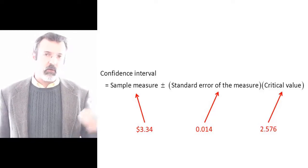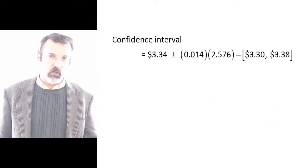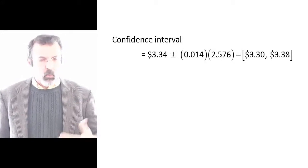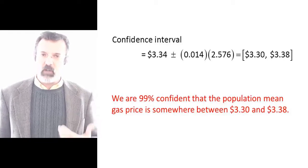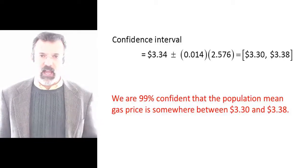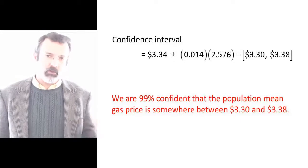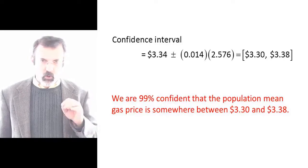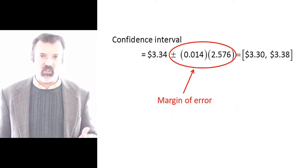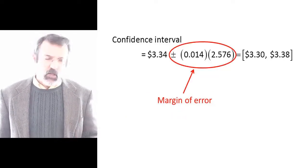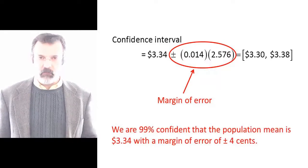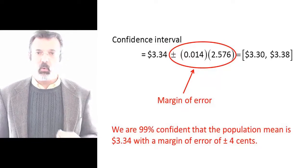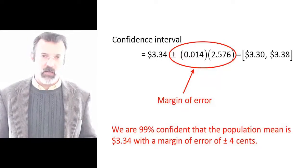This gives me a range of $3.30 on the low end and $3.38 on the high end. So I would make a statement like the following: we are 99% confident that the population average price of gas is somewhere between $3.30 and $3.38. The plus or minus part we call the margin of error — in this case, the margin of error is 4 cents. So we could say: we are 99% confident that the population average price of gas is $3.34 with a margin of error of plus or minus 4 cents.